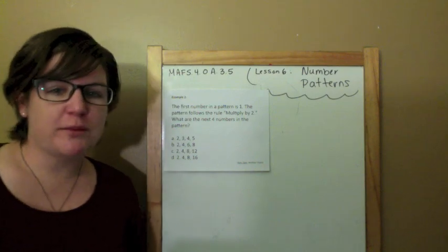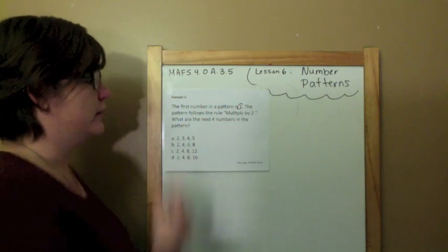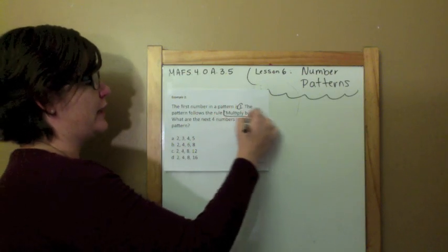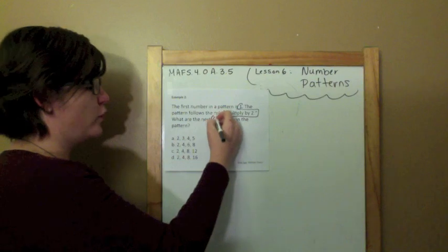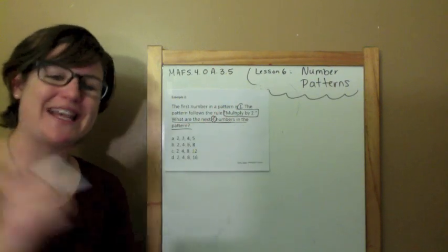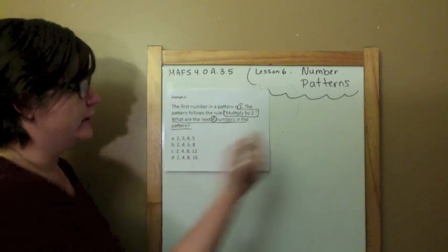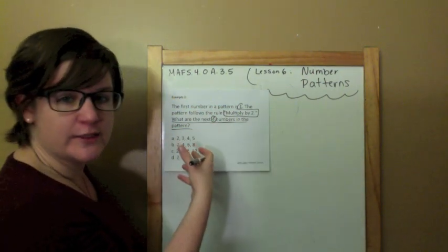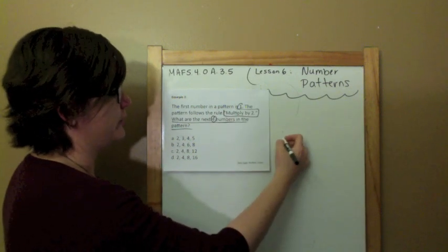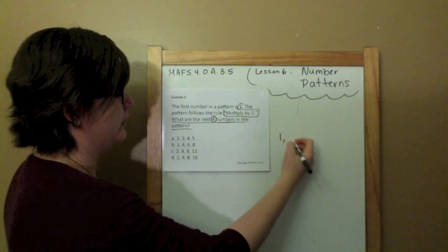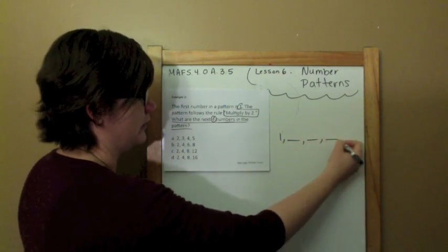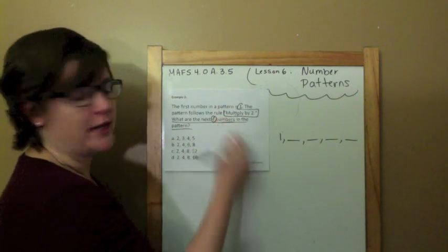The first number in the pattern is 1. The pattern follows the rule, multiply by 2. What are the next four numbers in the pattern? I'm going to underline that question, because that's what it's asking me to do. Find the next four numbers in the pattern. So, I'm going to show my work over here. It's multiple choice. I'm just going to select the answer that matches my work.